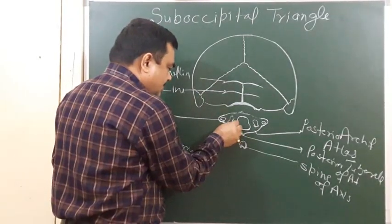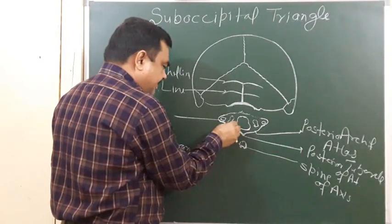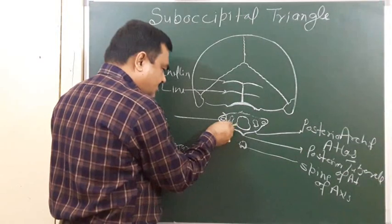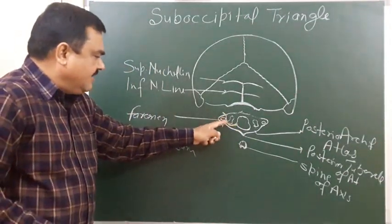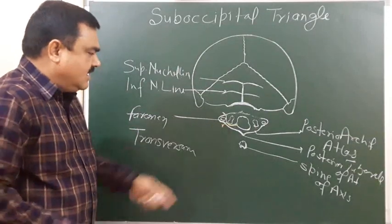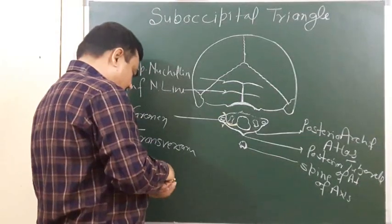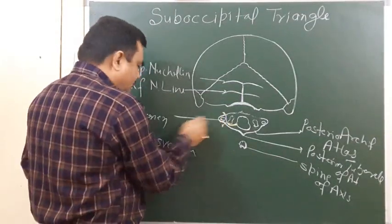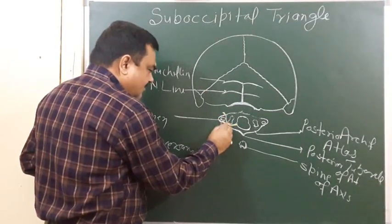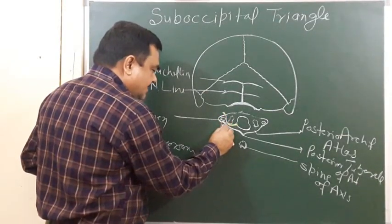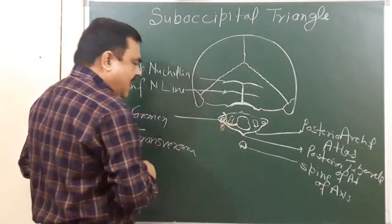Here is the first nerve C1. This is the ventral ramus of C1 and this is the dorsal ramus of C1. Through the foramen transversum, one artery passes — that artery is the vertebral artery.